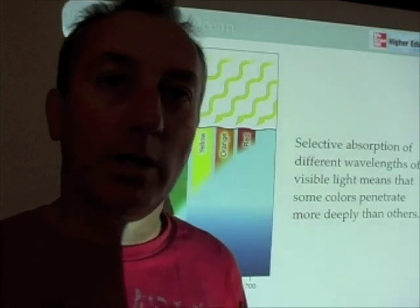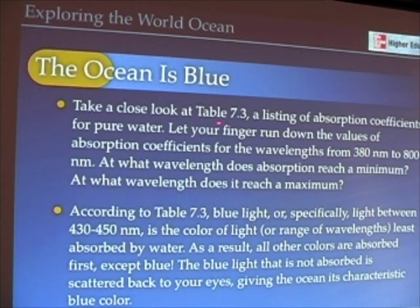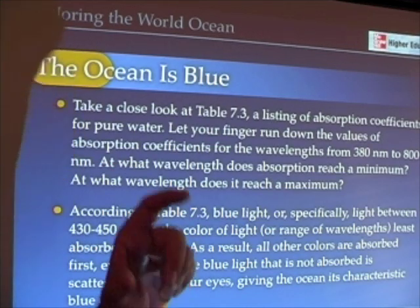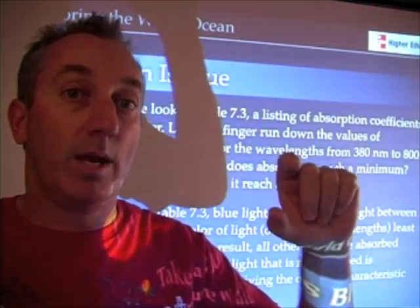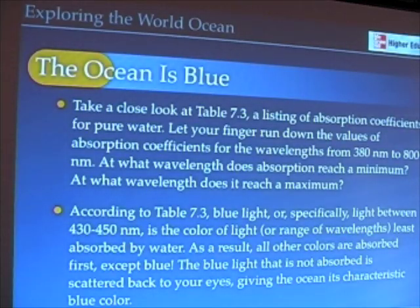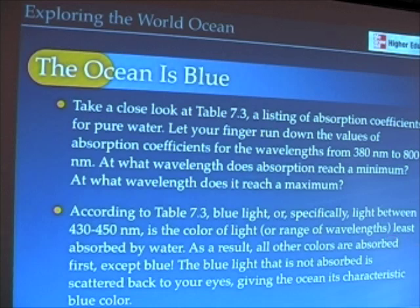Water and seawater absorb all these other colors first, leaving blue behind. That's why, simply speaking, the ocean is blue — because water absorbs all other colors first, leaving the blue behind. If you look at Table 7-3 in your book, you'll see a listing of absorption coefficients. You'll find that 430 to 450 nanometers are the wavelengths that are least absorbed by water. The blue light that is not absorbed scatters back to your eyes, giving the ocean its blue color appearance.